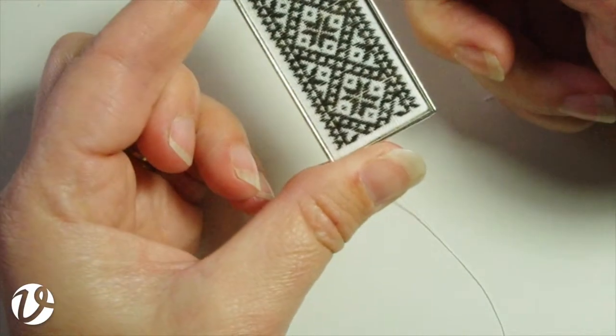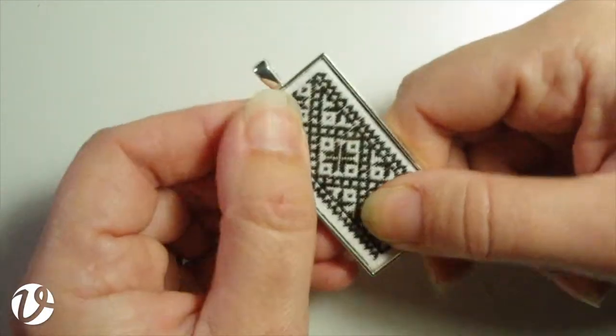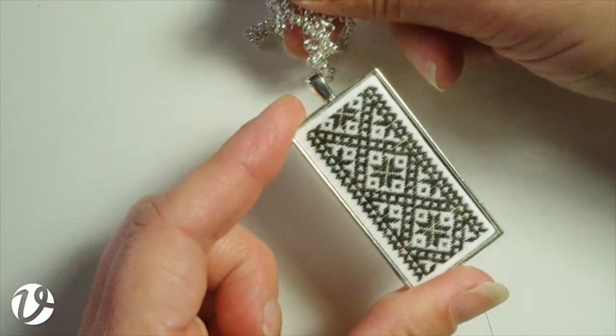Okay, and then gently position that into the centre and give it a really good strong press. And there we are. There's the finished pendant. We'll put the chain onto it and then it'll be ready to wear.